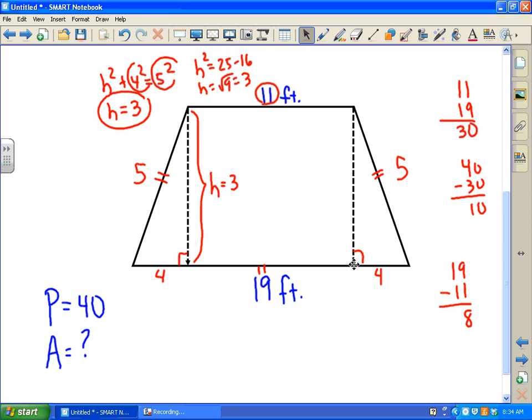And at this point, we can figure out the area of this trapezoid by taking the average of the bases times the height. Well, if we take 11 plus 19, we know that's 30. 30 divided by 2, that's 15.